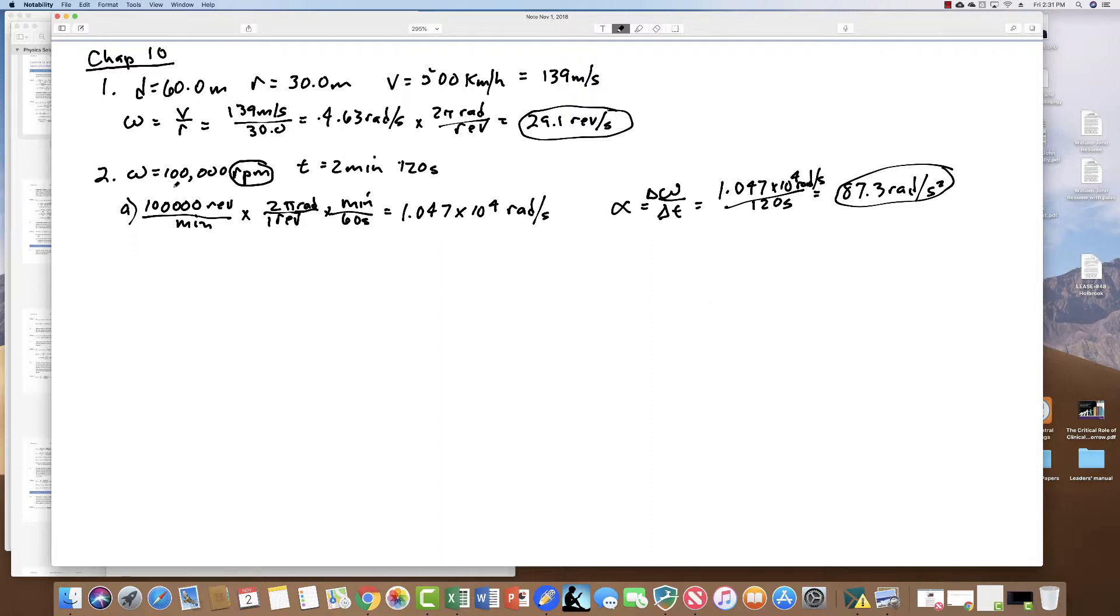You do the math and you get 87.3 radians per second squared. So that's part one. Part two states: what is the tangential acceleration at a point 9.5 centimeters from the axis of rotation? So 0.095 meters from the center of rotation. Tangential acceleration, what I've called linear acceleration, equals the angular acceleration times the radius of whatever point you're looking at. So it's going to be 87.3 radians per second squared times 0.095. If you do the math, you get 8.29 meters per second squared. So the tangential acceleration at that point is 8.29.